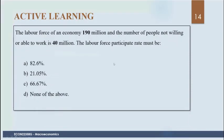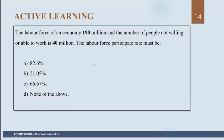The next question relates to the labor force participation rate. The labor force participation rate is the labor force divided by the working age population. The working age population includes the labor force and those not willing or able to work. So our denominator is 190 plus 40 million = 230 million. On top we have just the labor force of 190 million. So we take 190 divided by 230 and get 82.6%. The correct answer is A.